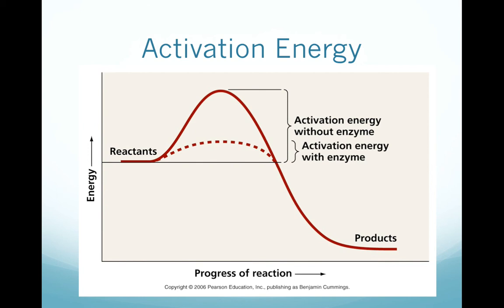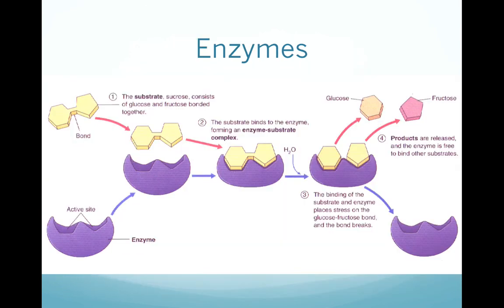The activation energy keeps molecules quiet until they're needed. When the time comes for a necessary reaction to take place, a specific type of protein called an enzyme steps in and helps the reaction along by reducing the activation energy necessary for it to occur. Different enzymes regulate all the different metabolic processes in your body — without them we wouldn't be able to live. Each enzyme has an active site where a substrate can bind.